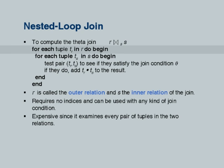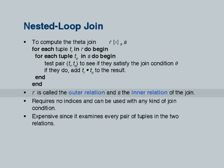Some terminology: the first loop, the outer loop relation, is called the outer relation, and the relation used in the inner loop is called the inner relation. I can even flip — I can use R as the outer and S as inner, or S as outer and R as inner. I have a choice and the cost will vary a little bit depending on that.